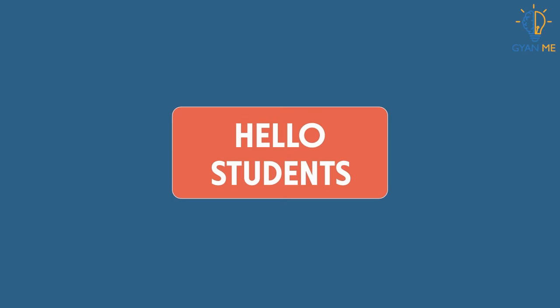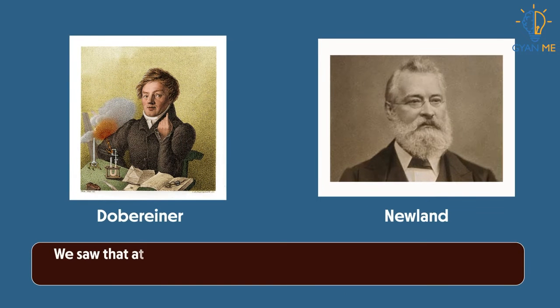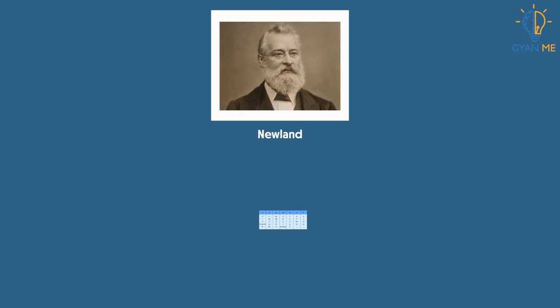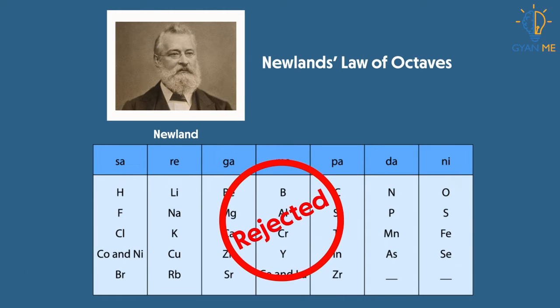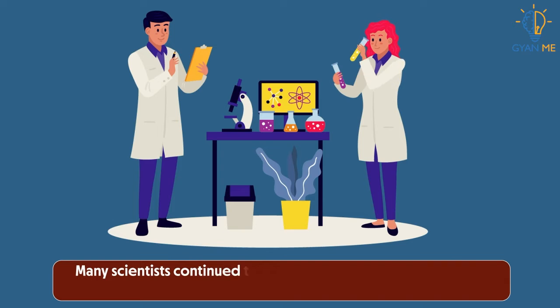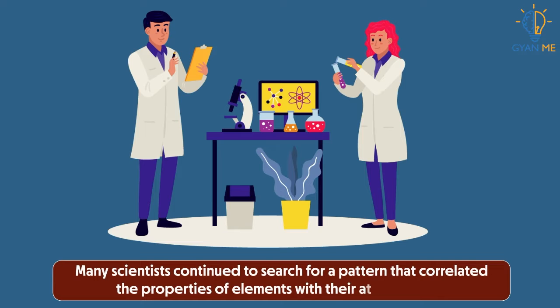Hello students, we have already seen the attempts of Dobreiner and Newland to classify elements according to their atomic mass. We also saw why they failed. Even after the rejection of Newland's laws of octaves, many scientists continued to search for a pattern that correlated the properties of elements with their atomic masses.